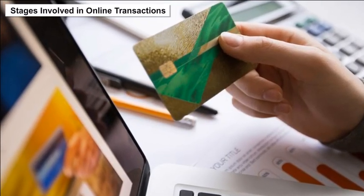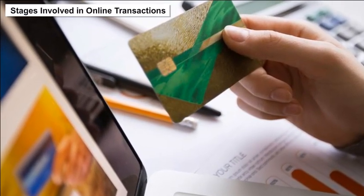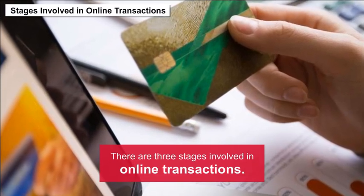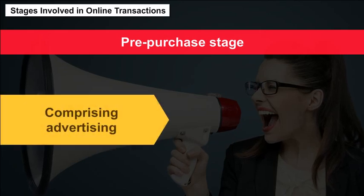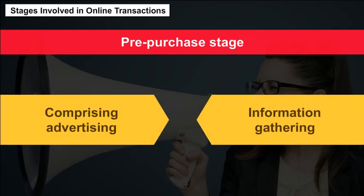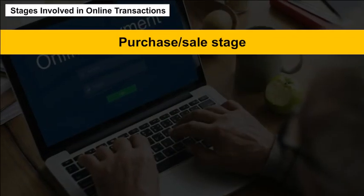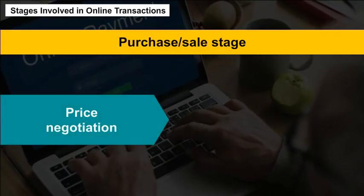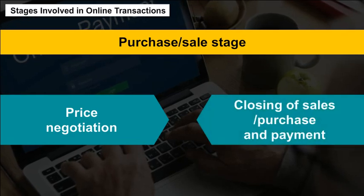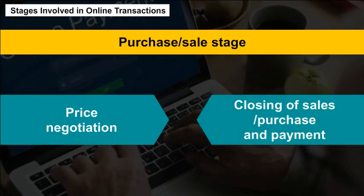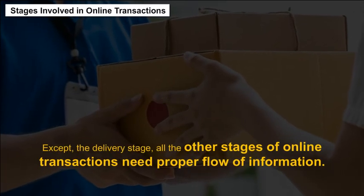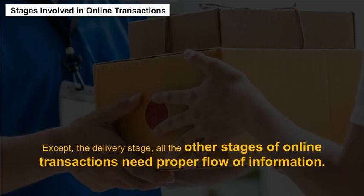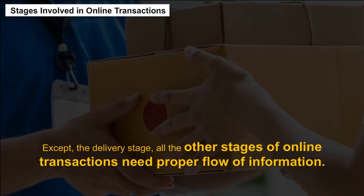Online Transactions: There are three stages involved in online transactions. First, the pre-purchase stage, comprising advertising and information gathering. Second, the purchase or sales stage, involving price negotiation, closing of sales or purchase, and payment. Third, the delivery stage. Except for the delivery stage, all other stages of online transactions require proper flow of information.